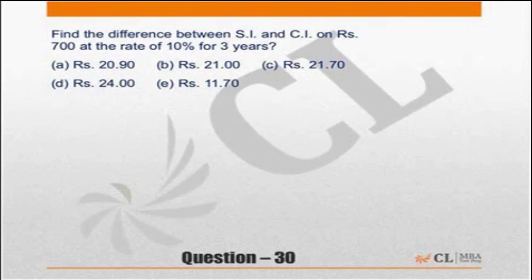Why is the distance between SI and CI on 700 at the rate of 10% for 3 years? Simple interest at 10% for 3 years, simple interest will be equal to 30% of principal. So simple interest will be 10% every year, so for 3 years it will be 30%.